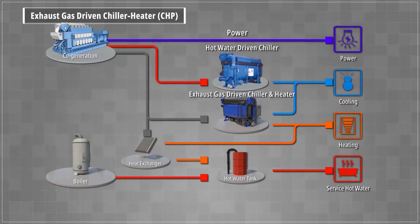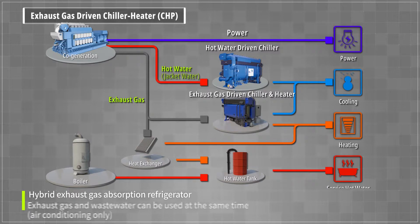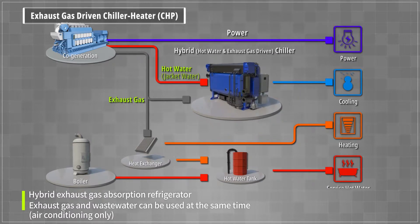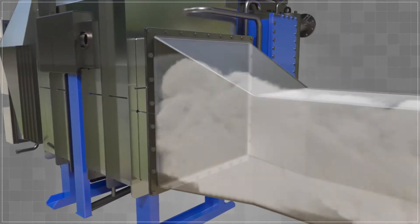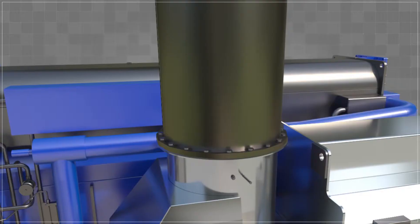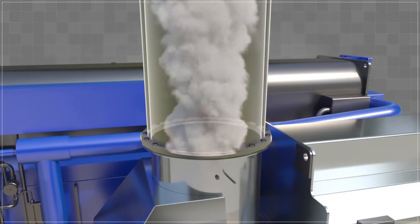CHP utilizes exhaust gas waste heat to provide chilled and hot water, while HWARL utilizes engine jacket water to provide chilled water. The CHP model, a hybrid type absorption chiller, can use a combination of engine exhaust gas and cooling water as a heat source.